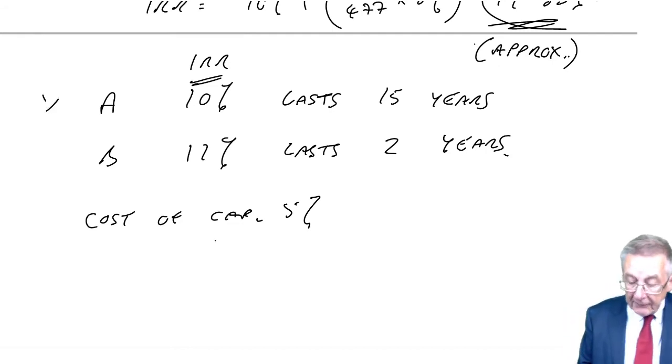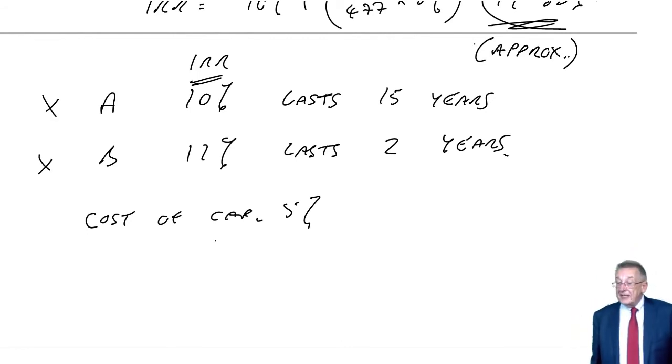You can't compare projects in the same way. What you'd have to do is work out the net present value of both, and whichever was the highest net present value would be the better. But you can't validly compare internal rates of return. You can't automatically say B is better.